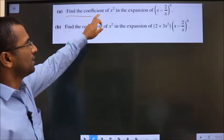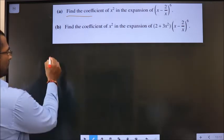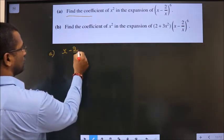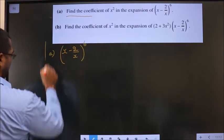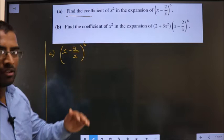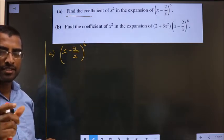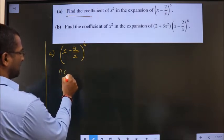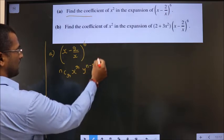Find the coefficient of x square in the expansion of (x minus 2 by x) to the power 6. For any binomial theorem sum, we should write the general term first. General term is nCr x power r y power n minus r.